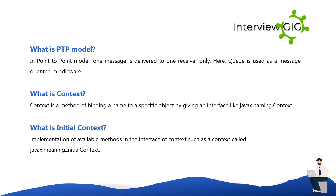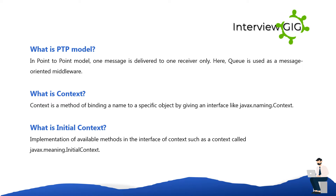What is PTP Model? In the point-to-point model, one message is delivered to one receiver only. A queue is used as message-oriented middleware. What is Context? Context is a method of binding a name to a specific object by giving an interface like javax.naming.Context. What is Initial Context? Implementation of available methods in the interface of context, such as a context called javax.naming.InitialContext.